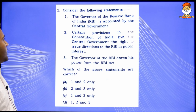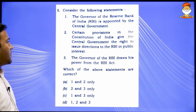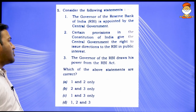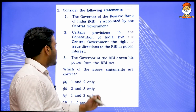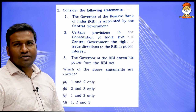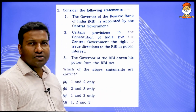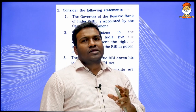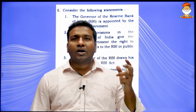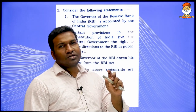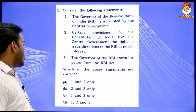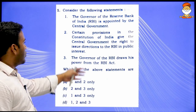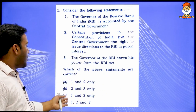Question number 1: The Governor of the Reserve Bank of India is appointed by the central government. Second, certain provisions in the Constitution give the central government the right to issue directions to the RBI in public interest. Third, the Governor of RBI draws his power from the RBI Act. There is nothing in the Constitution regarding RBI — no article at all. So we are eliminating statement 2, leaving only 1 and 3. Once you eliminate, move on and save time.